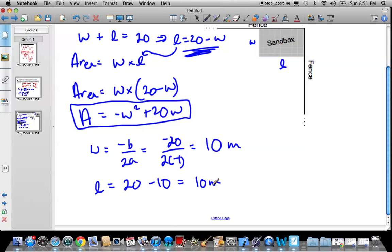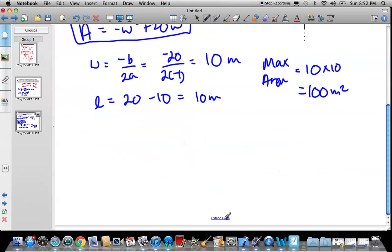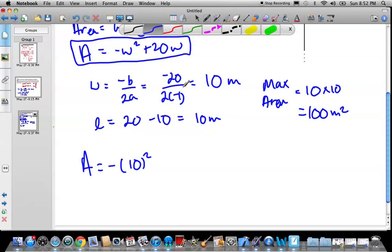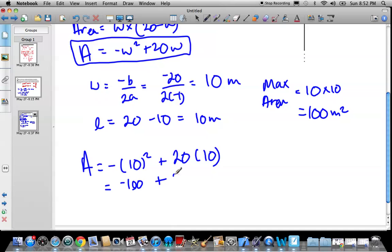So actually, my width and my length are the same. Usually that's going to be the case because usually a square is going to give you a maximum area. Or usually, probably always. I don't know if I want to commit to that, but usually that's the case. So my max area, given my max dimensions, 10 times 10, which is going to be 100 meters squared. Now you could have easily found it just by using your formula. Area is equal to negative 10 squared plus 20 times 10. So you got negative 100 plus 200, which equals 100 meters, which is the same thing as we have here, squared.